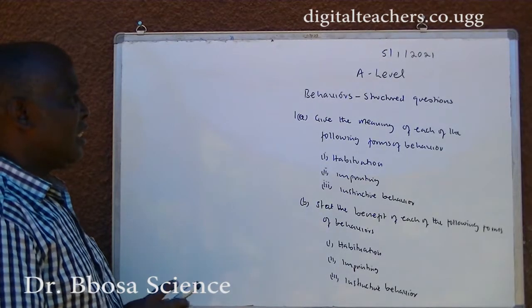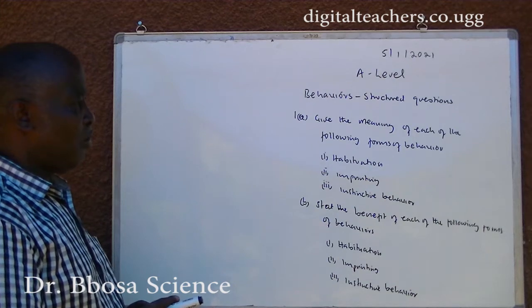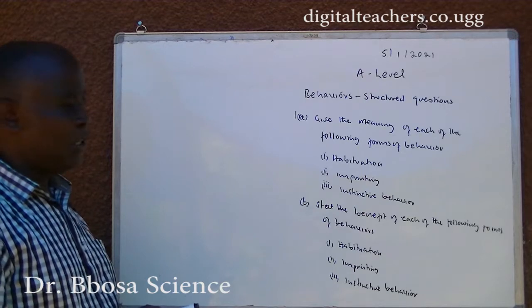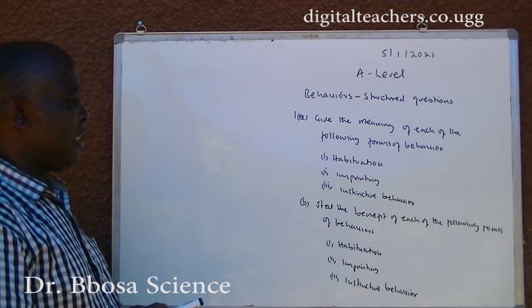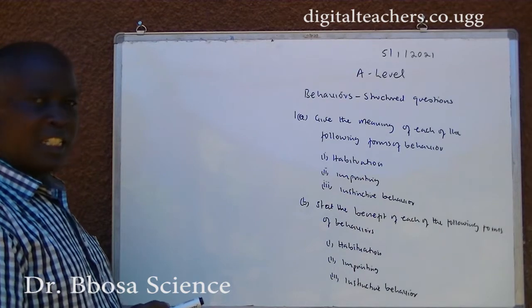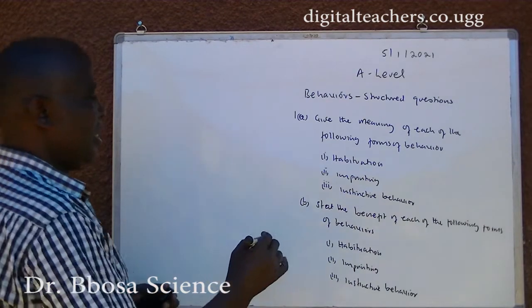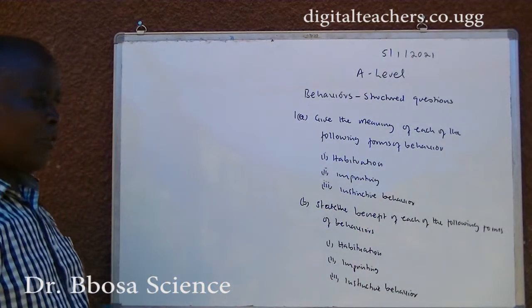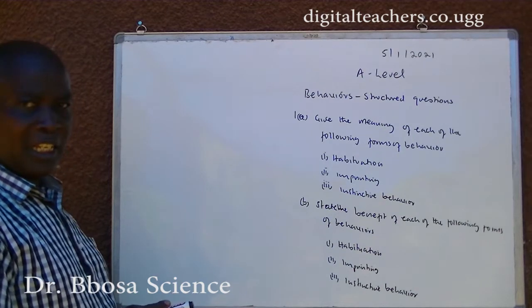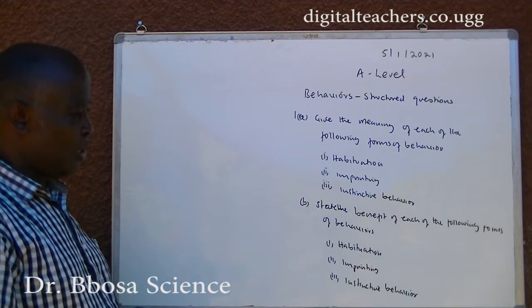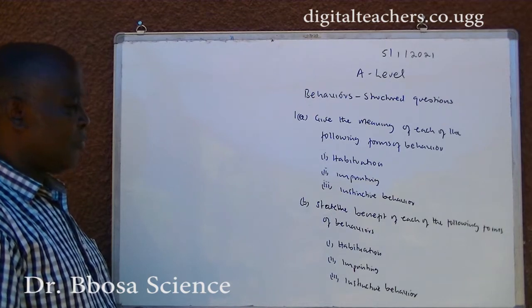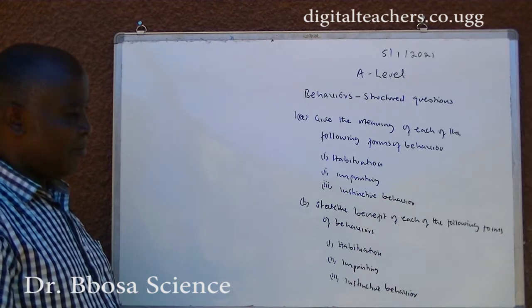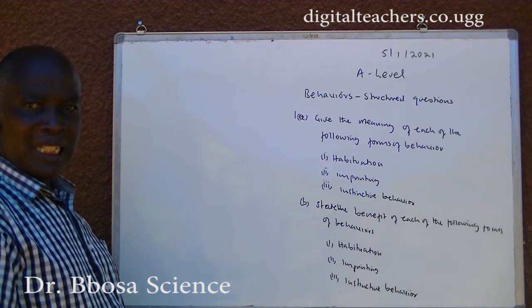Number 1 A. Give the meaning of each of the following forms of behavior: 1. Habituation, 2. Implanting, 3. Instinctive Behavior. B. State the benefit of each of the following forms of behavior: 1. Habituation, 2. Implanting, 3. Instinctive Behavior. You can pause and answer.